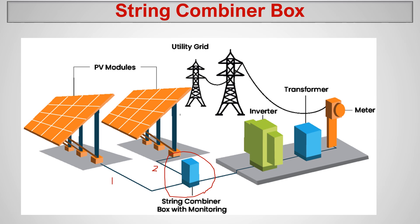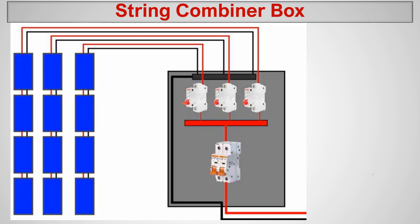The strings are combined here into a parallel circuit. A string means we have series-connected solar modules connected together. So we have two strings here, and these two strings come into the combiner box. The combiner box makes them into one output, which goes to the inverter. So the inverter receives only one output, while the combiner box receives two inputs from the solar strings.